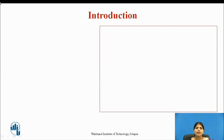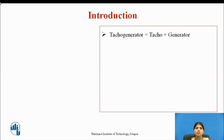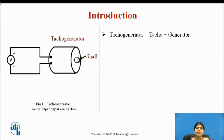The word tachogenerator comes from the Greek word tacho. Tachogenerator consists of two words: tacho plus generator. In Greek, tacho means speed and generator means an instrument which generates power. The figure shows the tachogenerator and shaft. A tachogenerator is a device used for measuring the speed of a shaft and converting this speed into a voltage so that it can be measured.